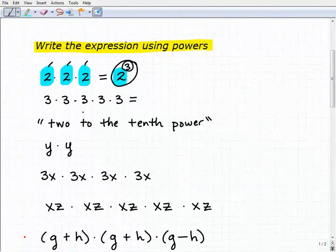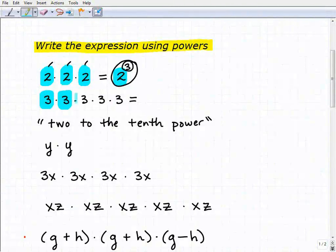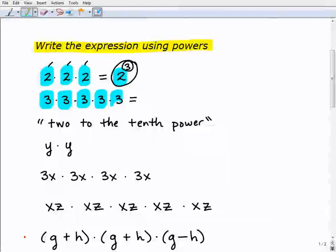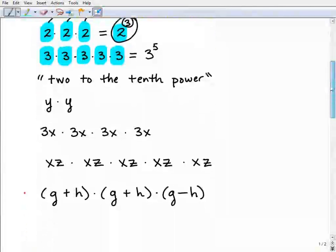Alright, so moving on, you might want to try this problem. Same thing. There's not any trick questions here. It's just basically practice. So we're taking 3 and we're multiplying it by itself 1, 2, 3, 4, 5 times. Okay, so that is 3 to the 5th power. Pretty straightforward stuff.